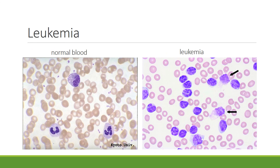Another term was leukemia. Leuco means white and emia refers to the blood, so leukemia is a cancer of white blood cells. If you look at the slide on the left, that's what normal blood looks like. The slide on the right shows an abundance of white blood cells, which is abnormal — this condition is leukemia.